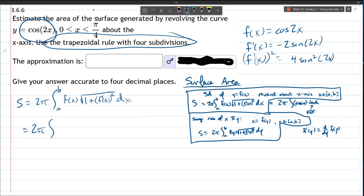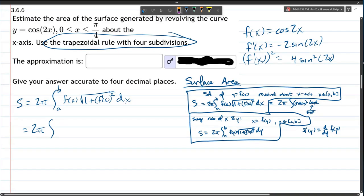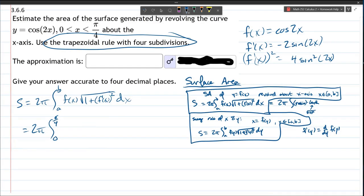Now what about the x values? The x values are 0 to π over 4. And we have cos(2x) and square root of 1 plus, we've already found f prime squared, so it's 4 sine squared 2x dx. Okay, we are now ready to not integrate, but use the trapezoid rule with 4 subdivisions.